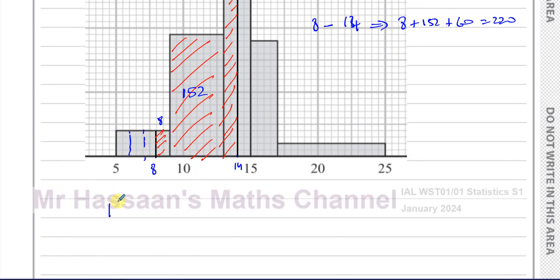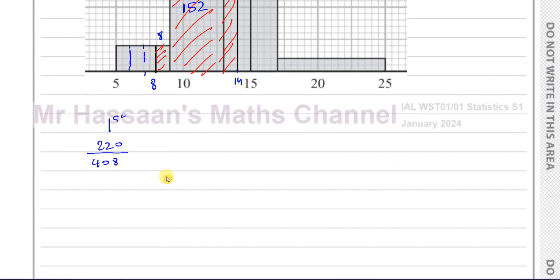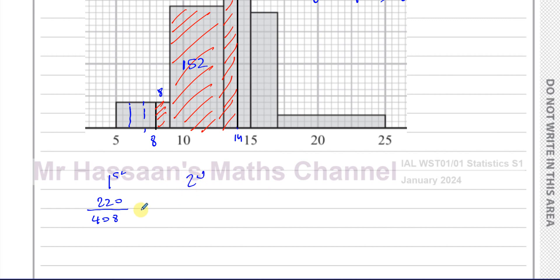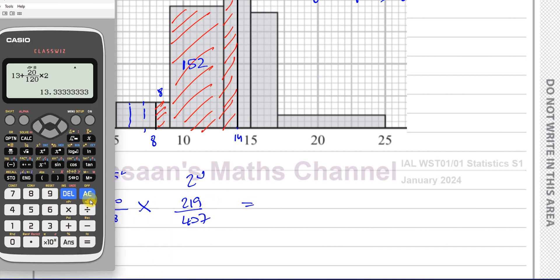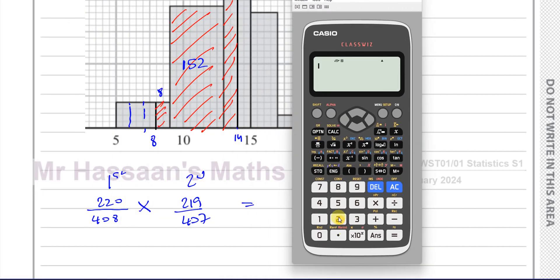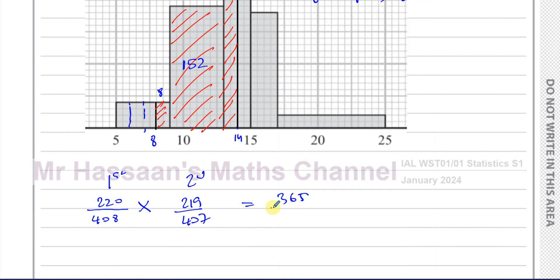So for the first pick we have 220 to choose out of a total of 408. And for the second pick, we already picked one of those in this category so that's 219, and we've already picked one of the whole group so that's 407. If I multiply those two together I'm going to get my answer. So we take 220 over 408, we multiply that with 219 over 407, and that gives us 365 over 1258.